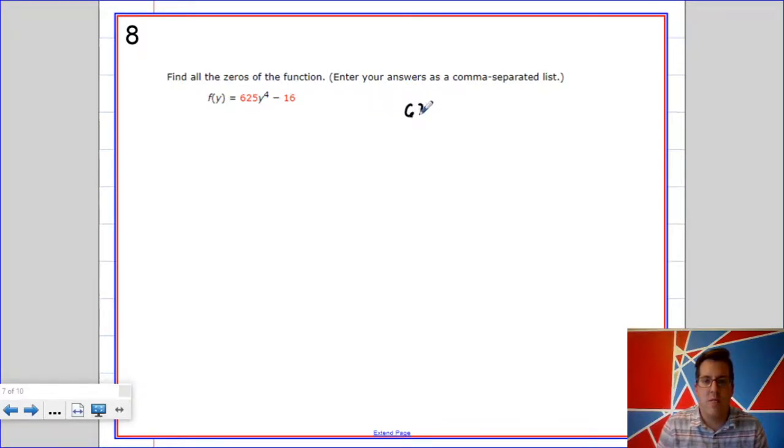So 625 is 25 squared, y to the fourth is y squared squared, and 16 is 4 squared.